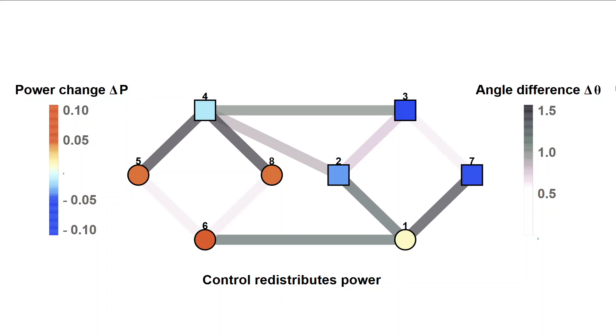In this example, the network would overload without control. The added control reduces the amount of consumed power by some nodes and increases the consumed power in other parts of the network, thereby shifting the flow away from the critically loaded lines.